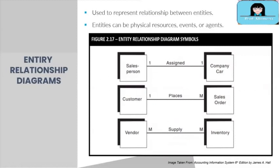Next are entity relationship diagrams or ERDs. An ERD is used to represent relationships between entities. In ERDs, entities can be physical resources, events, or agents, similar to the REA model on your module one. Physical resources include examples such as cash and inventory. Events include sales orders and payments. Agents include salespersons, customers, and vendors.